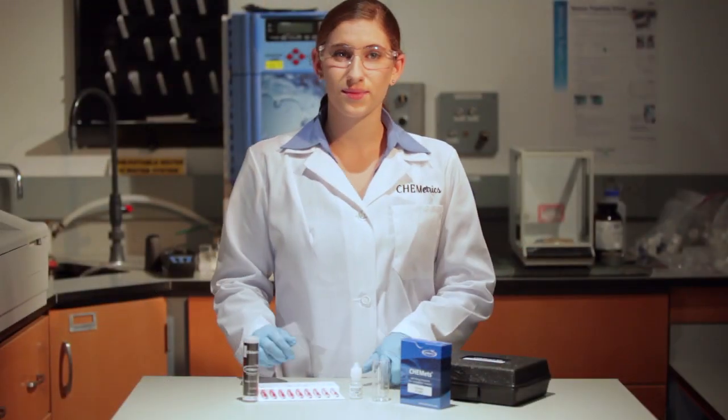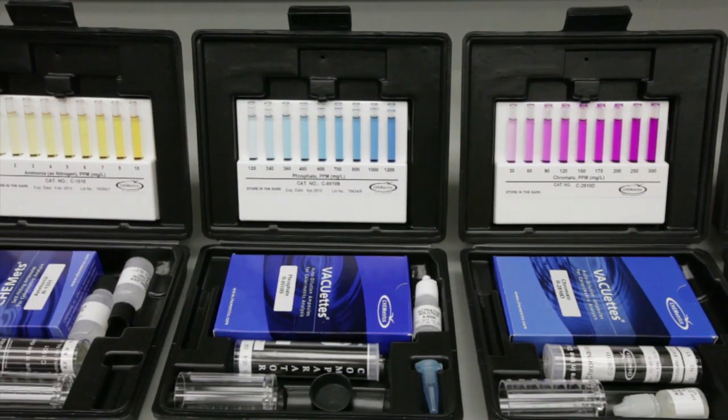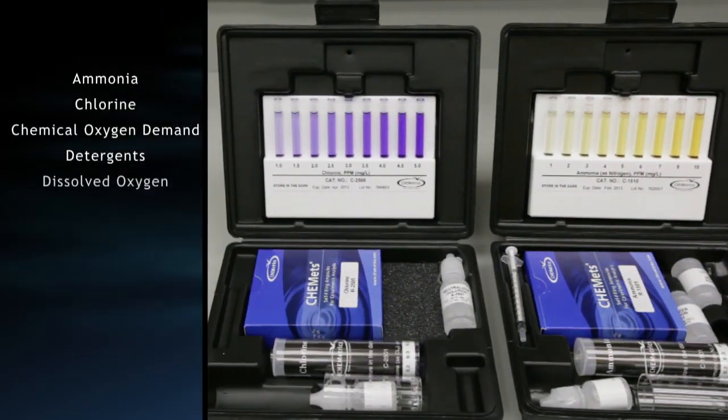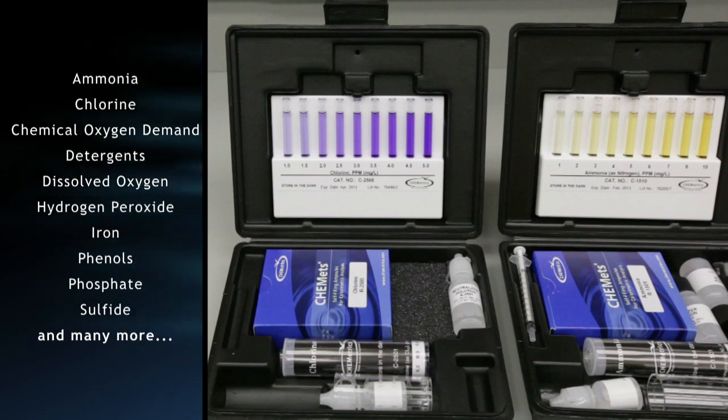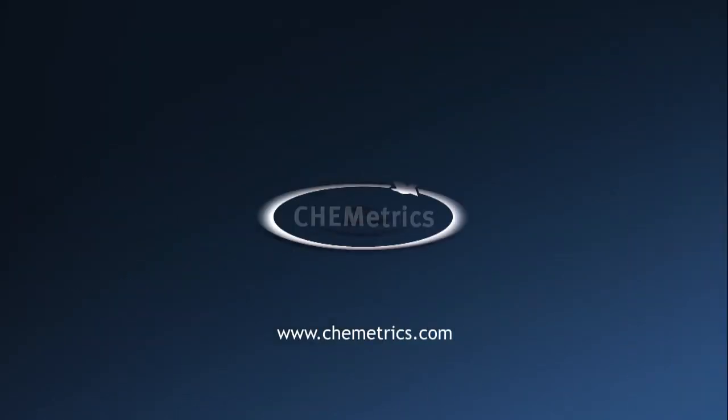Designed for field and lab use, most test kits come with everything needed to perform 30 tests. Reagent ampules and kit accessories are also sold separately. Visit our website at www.chemmets.com to order your test kit or refill today.